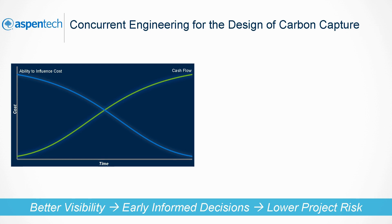This graph presents cash flow and the ability to influence cost over project time. Over the course of the project lifecycle, the chances to influence the project are constantly shrinking, while the cash flow is steadily increasing. That means any change or update made later costs much more than at an earlier stage.